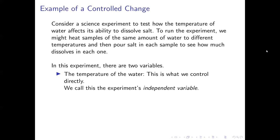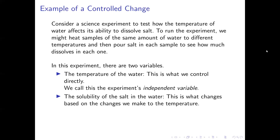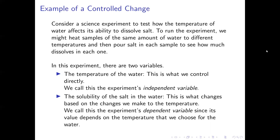There are two variables involved. The temperature of the water samples is the one we control directly — we decide what temperature each sample will be. We call this the independent variable, because it depends only on how we decide to set things up. The other variable is the solubility of the salt in the water — how much salt will dissolve. This changes because of the changes we make to temperature, so we call it the dependent variable, because its value depends on what we set the temperature to be.